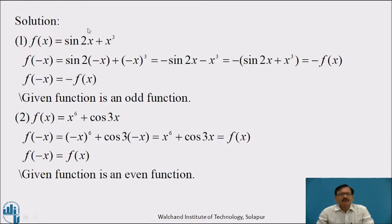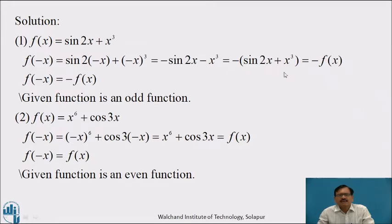Now, to test even and odd functions: the first function is f(x) = sin 2x + x³. Replace x by minus x: f(−x) = sin(−2x) + (−x)³ = −sin 2x − x³. Taking out minus as common: −(sin 2x + x³) = −f(x). Therefore f(−x) = −f(x), so the given function is an odd function.